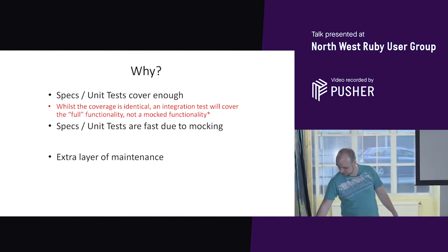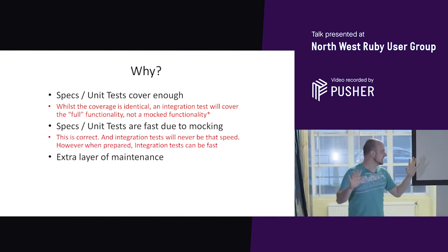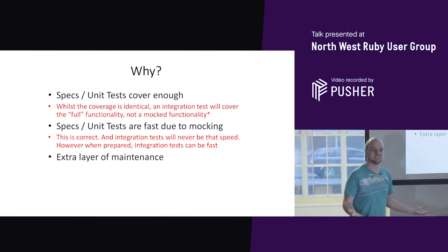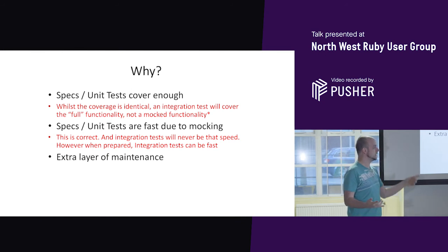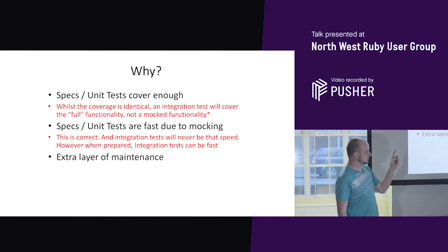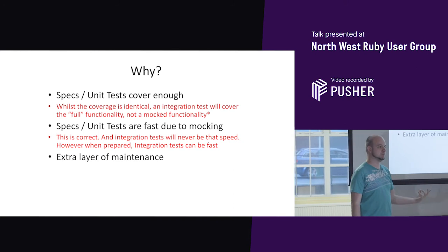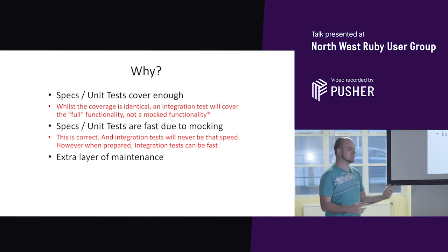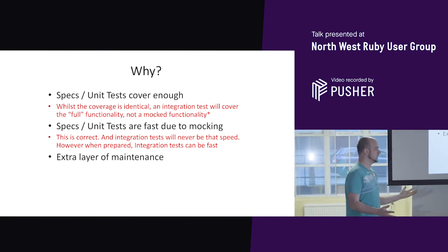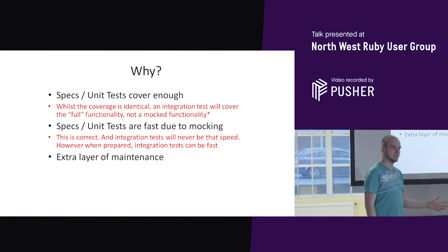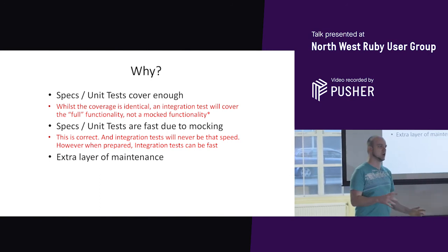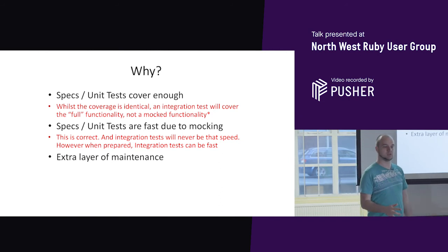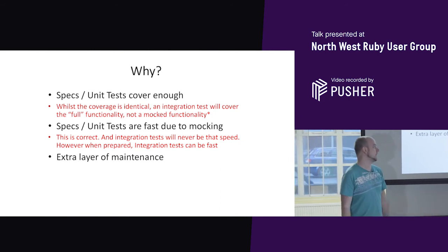Specs and unit tests are fast due to mocking — yeah, can't really argue against that. A unit test will always be faster than an integration test. However, one thing I will argue against is the perception that when you're running a feature test, whether it's browser automation or an API layer, they're always much slower than unit tests. Yes, they are slower, but they don't have to be really slow. They can actually be quite quick if you do a little bit of clever planning and spend a bit more time designing how you want the original framework to look.